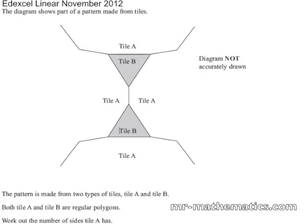We are going to calculate the number of sides that polygon A has. To do this we will set up an equation using the angles about a point.